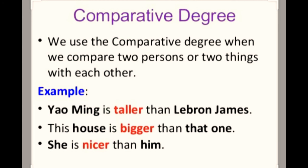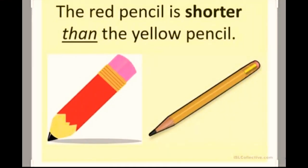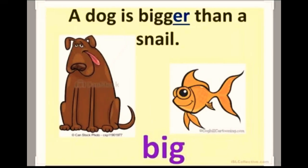For example: red pencil is shorter than yellow pencil, red pencil is smaller than yellow pencil. We compare two pencils and we use the comparative form.